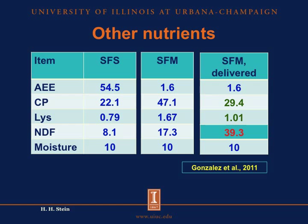The reason we had this relatively low concentration of crude protein and lysine in the delivered sunflower meal was that the NDF was much greater than expected. We had expected NDF to be 17.3%, but when we analyzed the sunflower meal, we found 39.3%. So we conclude from this that it is important to analyze ingredients to know exactly what we have, because sometimes things are not exactly what we expect.